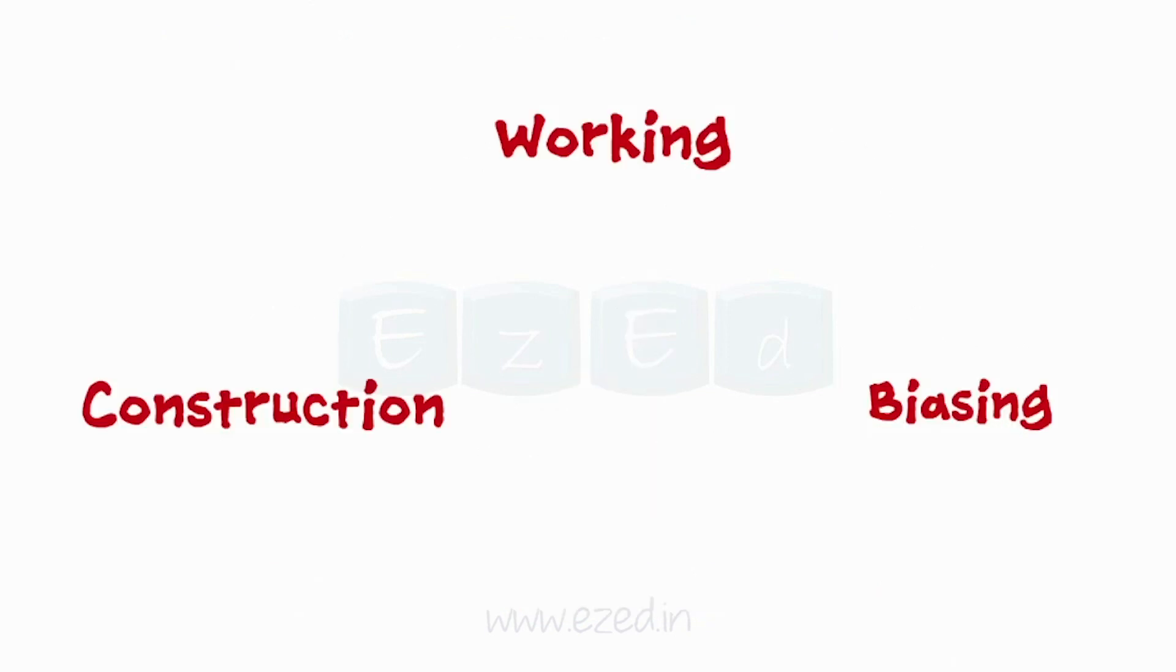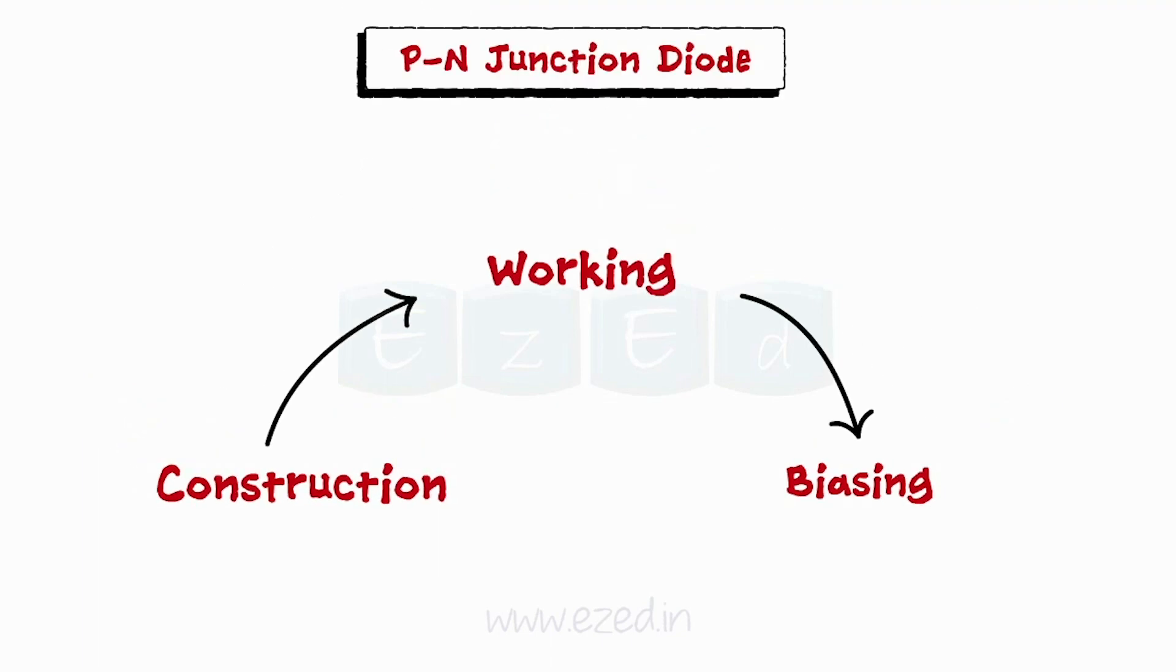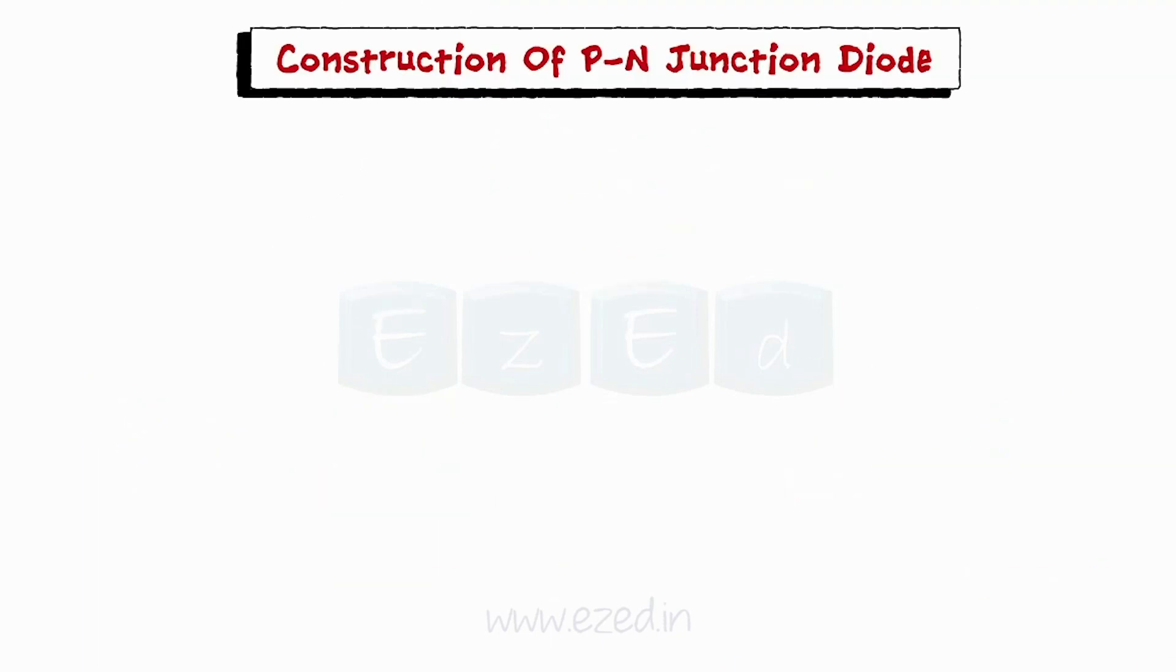Let's break the concept of diode into three parts: construction, working, and biasing of the diode. So let's start with the construction of a diode.